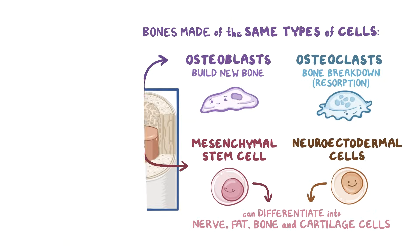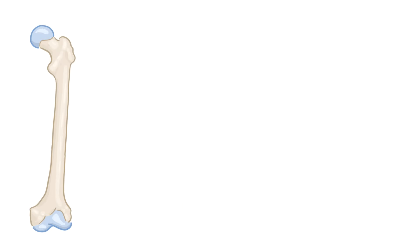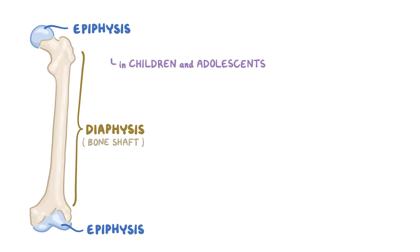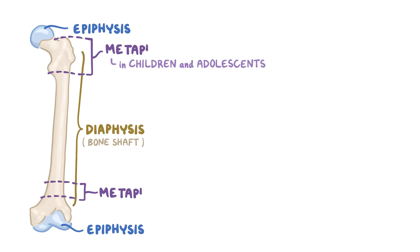In terms of anatomy, looking at a long bone like the femur, it has two epiphyses, which are the ends that contribute to joints with other bones. Between the two epiphyses is the diaphysis, also called the bone shaft. In children and adolescents, there is an additional narrow portion between the epiphyses and the diaphysis, called the metaphysis.